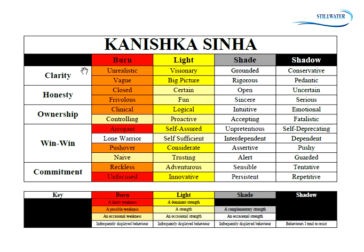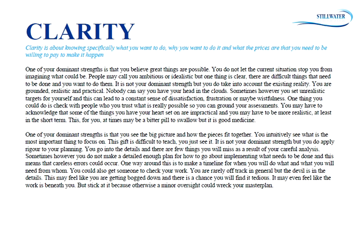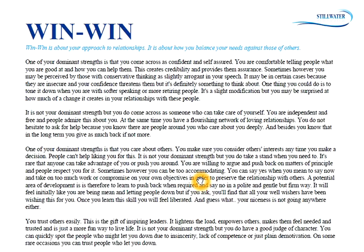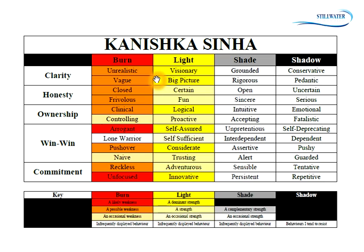Now, how do these summaries link to the following pages? You'll see there are two lines under clarity, two under honesty, two under ownership, four under win-win, and two under commitment. Each paragraph in the detailed pages links to one line and gives you more detail. If you see the summary and don't understand a line, you can go to the detailed explanation. If you have any questions about this model and how it applies to you, please feel free to call us — we always love hearing from you. I hope this is helpful and you can use it to develop your leadership capability. Have a great day!